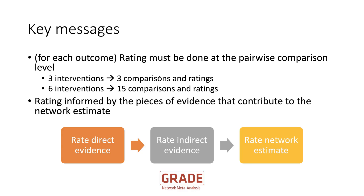If we have a network with six interventions, the total number of possible pairwise comparisons will be 15, and for each of these 15 we will need a rating. Another key message from this paper is that the rating of the network estimate needs to be informed by the pieces of evidence that contribute to it — mainly the direct evidence and the indirect evidence — and based on these two, you arrive at the rating of the network estimate.